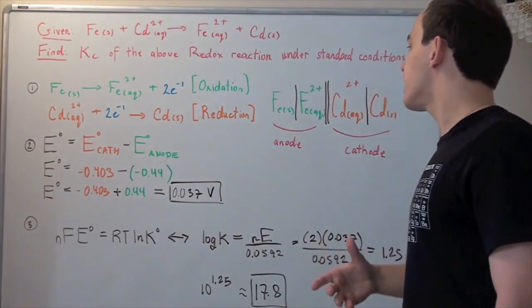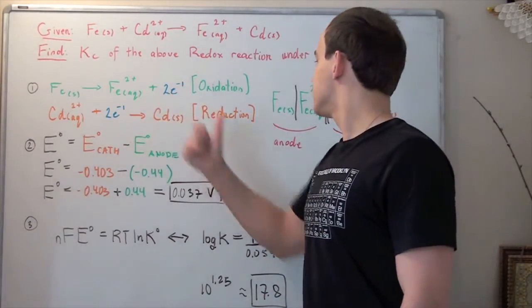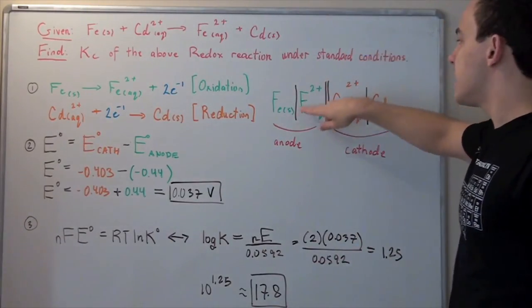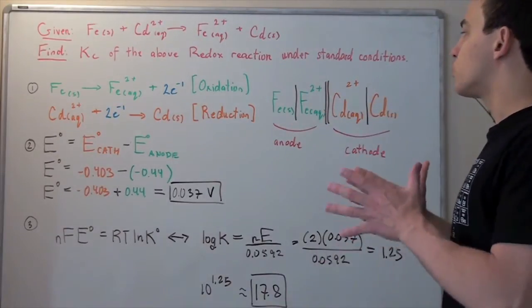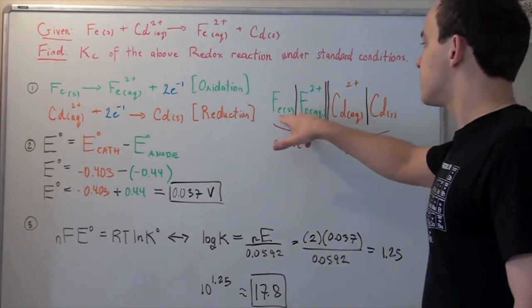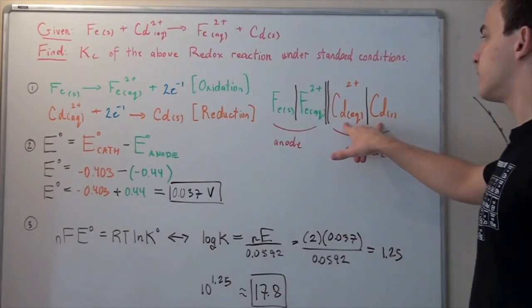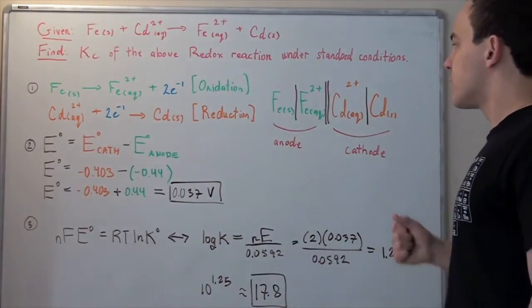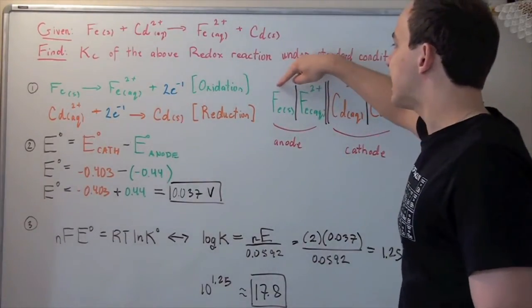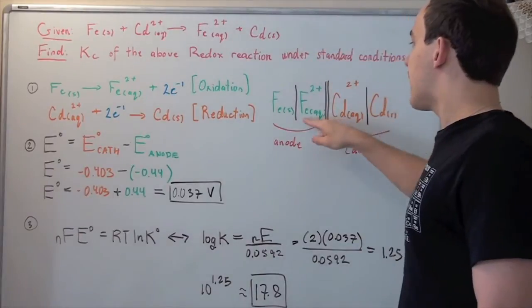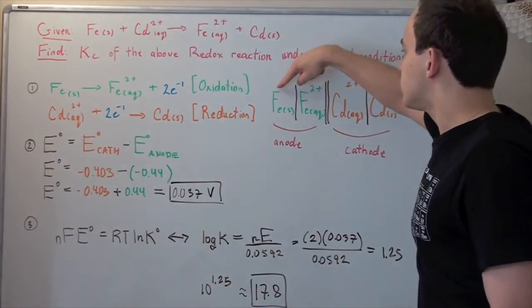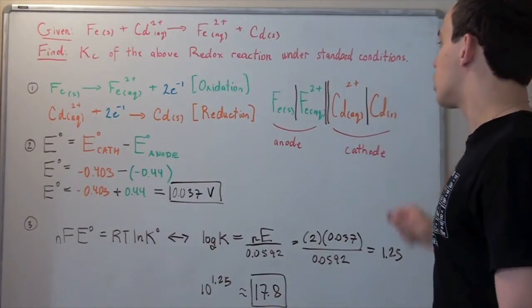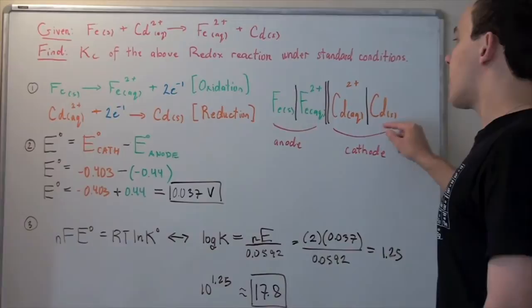Let's look at the cell diagram for this electrochemical cell. Remember, these two vertical lines represent the salt bridge and these single lines represent separations of phases. This is our anode and this is our cathode. Two electrons leave the iron atom forming the aqueous iron ion, and these electrons travel via the conductor to the cadmium ion, reacting with it to form solid cadmium.